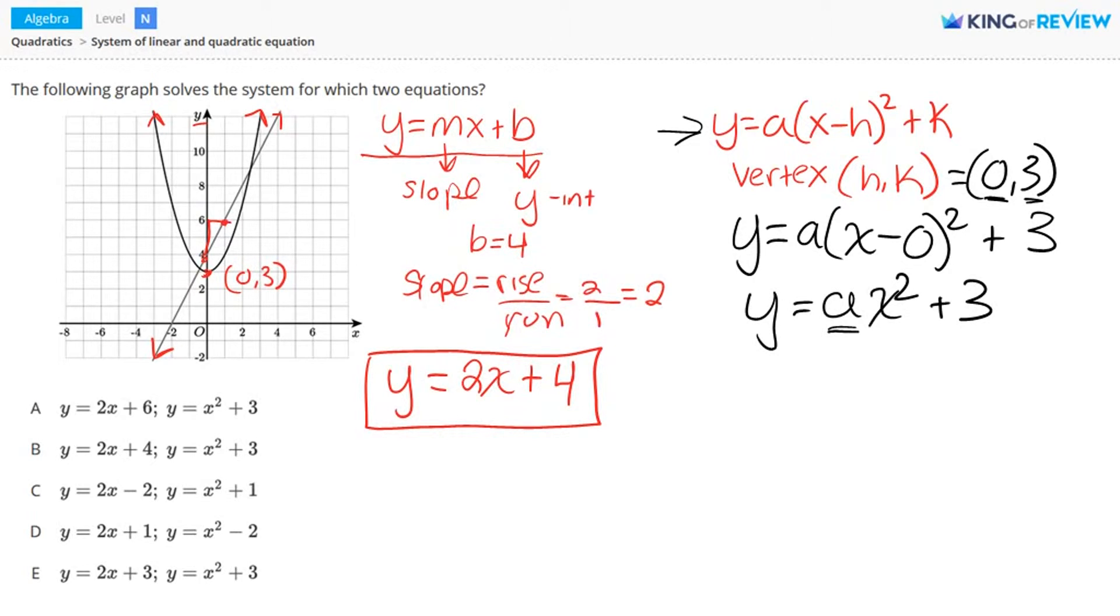Now we need to figure out what a is. To do this, we can find a point on our parabola and plug it into our equation to solve for a. Let's find a point on the parabola. We have a point here at (2, 7).